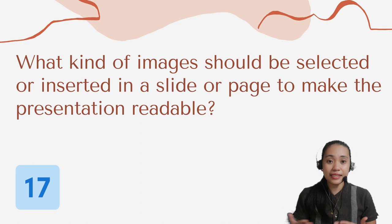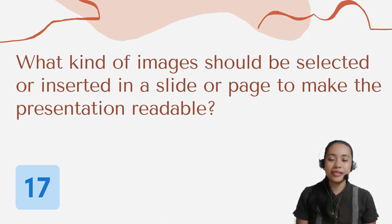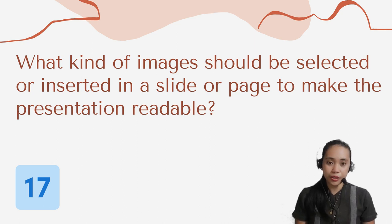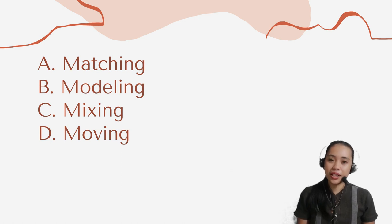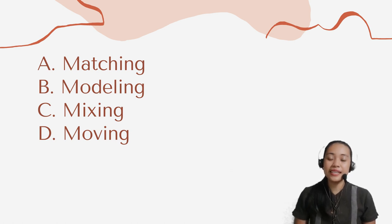Question number 17. What kind of images should be selected or inserted in a slide or page to make the presentation readable? Letter A: Matching. B: Modeling. C: Mixing. Or letter D: Moving.